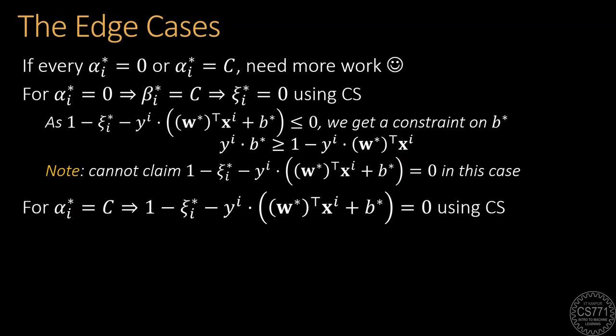Similarly, if a certain alpha*_i value is equal to C, complementary slackness tells us that 1 minus xi*_i minus y_i times (w*)^T x_i plus b* must be equal to 0.